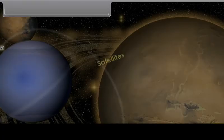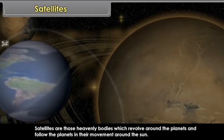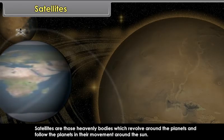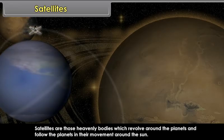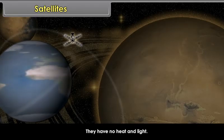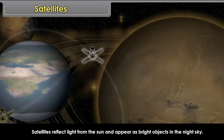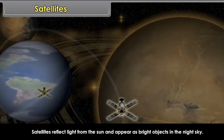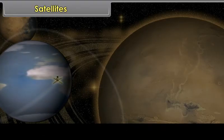Satellites. Satellites are those heavenly bodies which revolve around the planets and follow the planets in their movement around the Sun. They have no heat and light. Satellites reflect light from the Sun and appear as bright objects in the night sky.